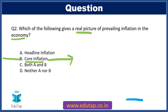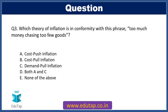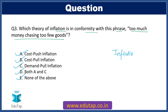Moving to our third question: which theory of inflation is in conformity with the phrase 'too much money chasing too few goods'? Option A: cost push inflation. Option B: cost pull inflation. Option C: demand pull inflation. Option D: both A and C. Option E: none of the above. This question comes from the inflation topic — if your concepts are clear, it should not be difficult. Do pause this video, apply your concepts, and then move on to cross-check your answer.